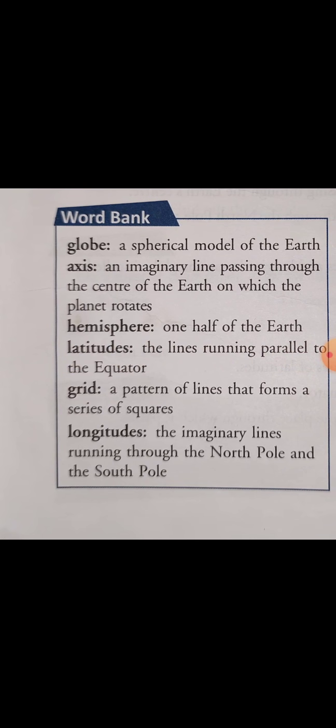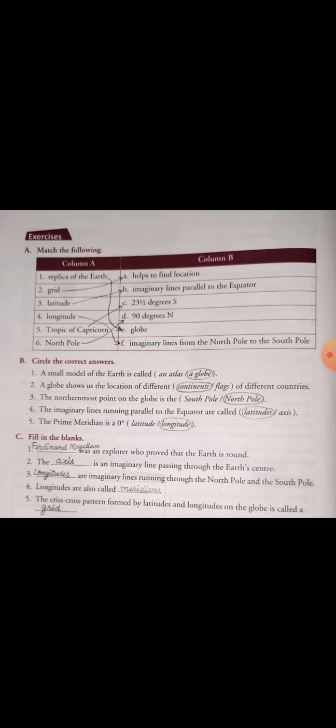Grid helps us find location. Latitude means the imaginary lines parallel to the equator. Longitude means the imaginary line passing from the north pole to the south pole. Tropic of Capricorn lies at twenty-three and a half degrees south. The North Pole is at ninety degrees north. Now we will move on to circle the correct answer.